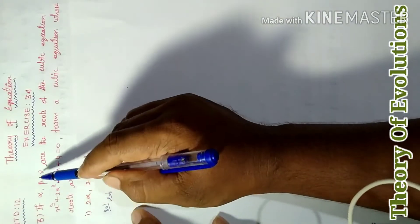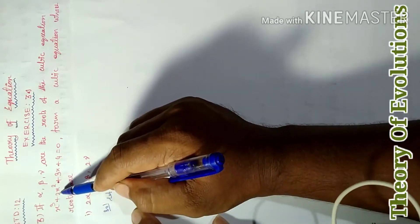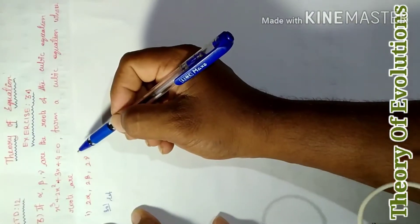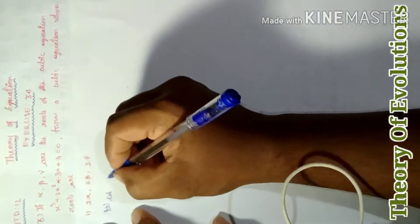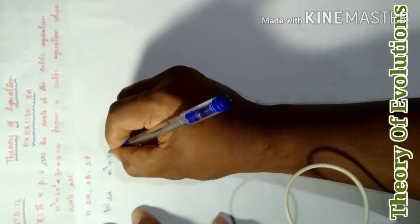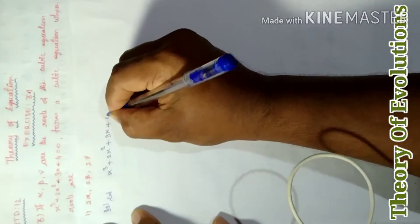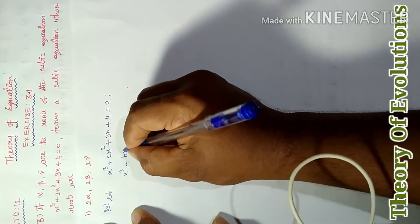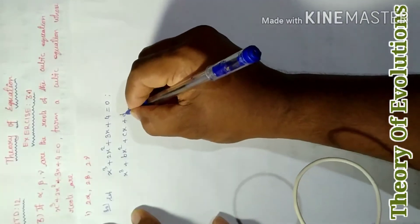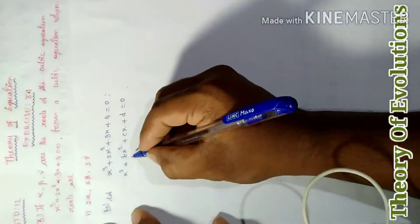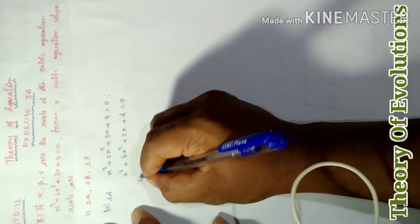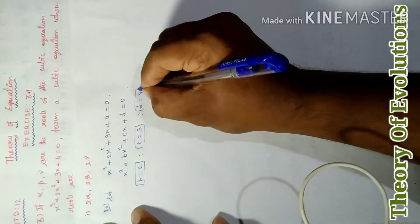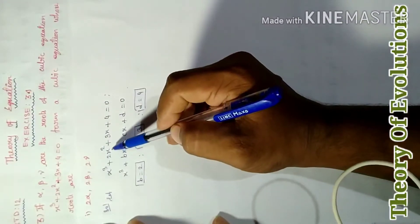From the given information, alpha, beta, gamma are roots of the cubic equation x³ + 2x² + 3x + 4 = 0. Comparing with the standard form x³ + bx² + cx + d = 0, we get b = 2, c = 3, d = 4.